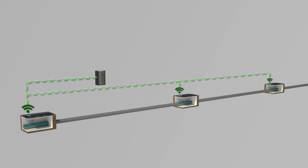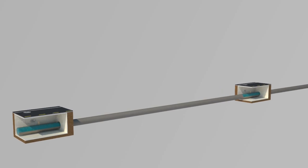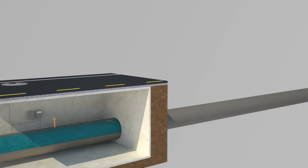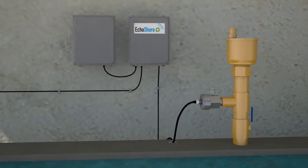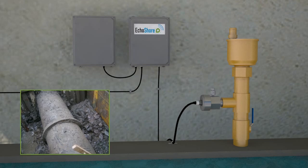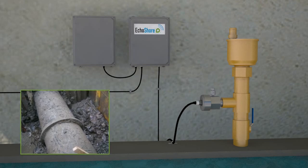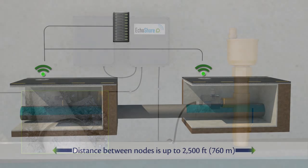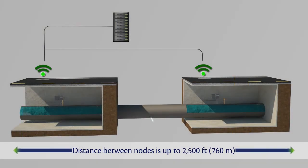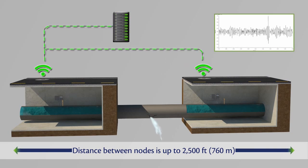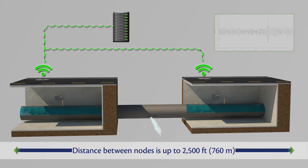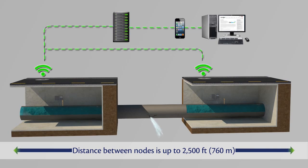The EchoShore platform is based on proven leak detection technology which is being used to survey thousands of miles of water mains, successfully locating leaks of all sizes. In the event of a leak, the EchoShore nodes will capture the data and send it to the central server for signal processing and leak location identification. This information allows operators to act quickly before a small problem becomes a major issue.